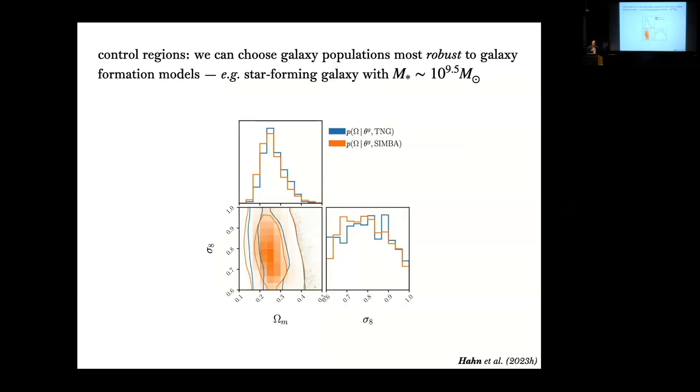The advantage though of this approach is that to borrow the language from the domain adaptation talk by Davis, we can exploit control regions, meaning that we can choose galaxy populations that are the most robust to different galaxy formation models. This is a figure from the paper that demonstrates this point. We select a star forming galaxy with intermediate stellar mass in TNG and in Simba and then we look at the posteriors of both of those galaxies. What we find is that the cosmological information in both simulations are nearly identical. So we can systematically do this and select galaxies that are robust to different changes in galaxy formation model.